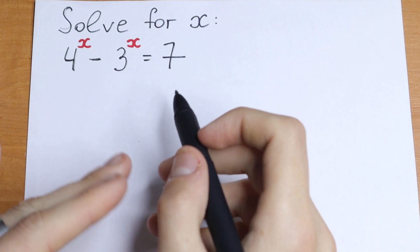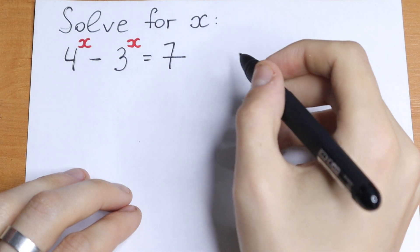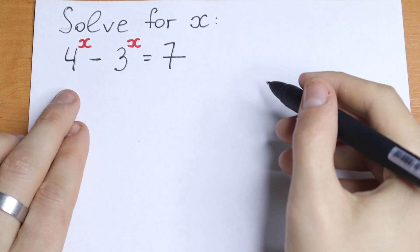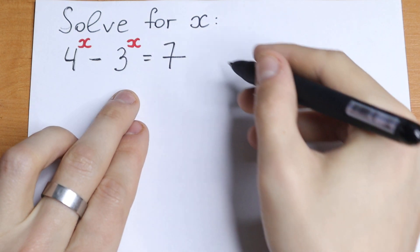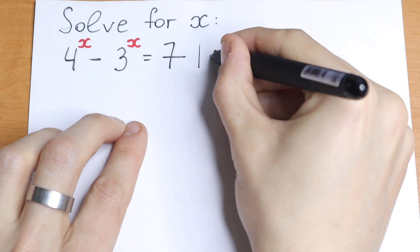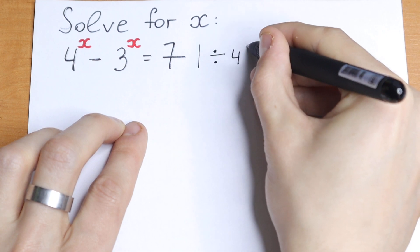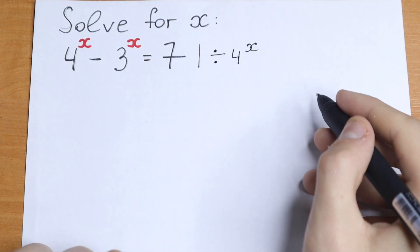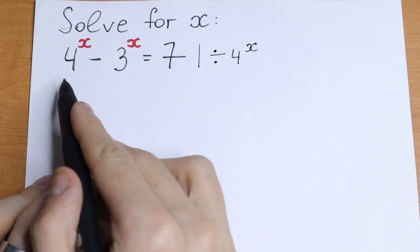I want to suggest my approach for how I solve this equation. First of all, we can multiply or divide both sides. In our case, let's divide both sides by 4 to the power x.